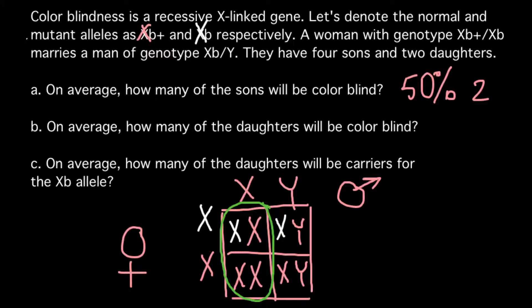So she wouldn't express this genetic disorder because this is a recessive genetic disorder. And another would be normal for both chromosomes. So our answer would be that 0% of the daughters would be color blind.